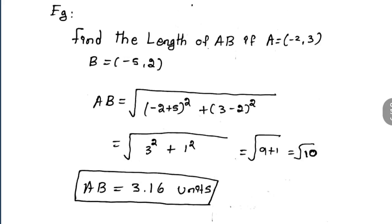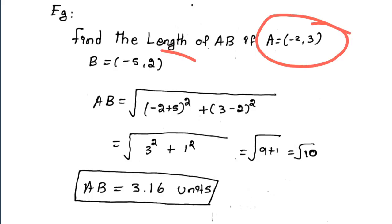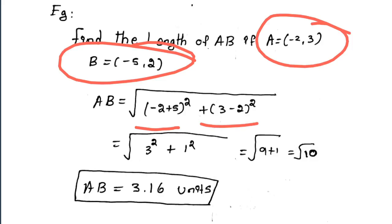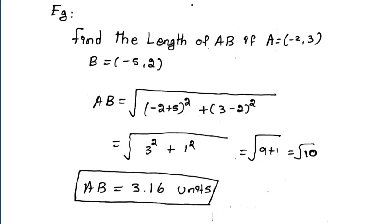For example, find the length of AB. A point and B point are given. So using the formula: square root of (x1 minus x2) squared plus (y1 minus y2) squared. So x1 is 9 minus x2 which is minus 2, giving minus 5 plus 5, which is 3. Then y1 minus y2: minus 2 plus 5 is 3, so 3 squared is 9. And 3 minus 2 is 1, so 1 squared is 1. So root of 10 gives approximately 3.16.